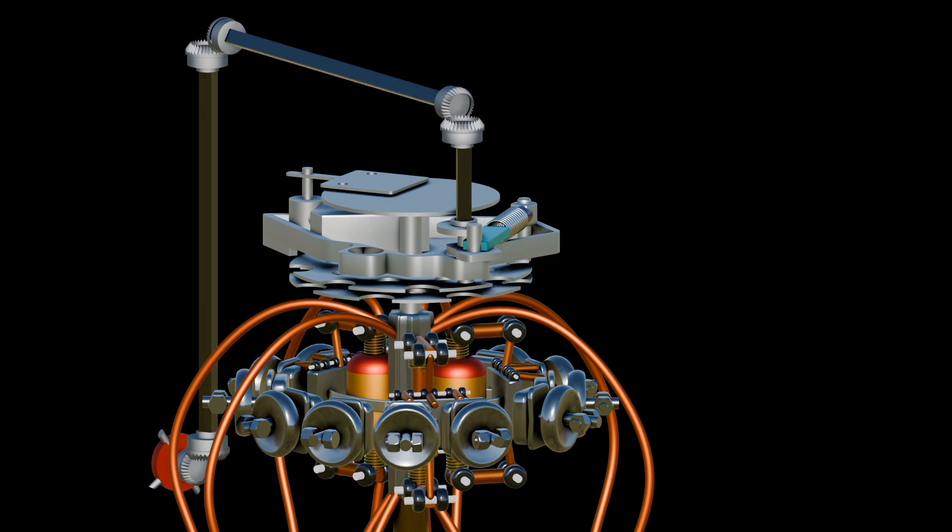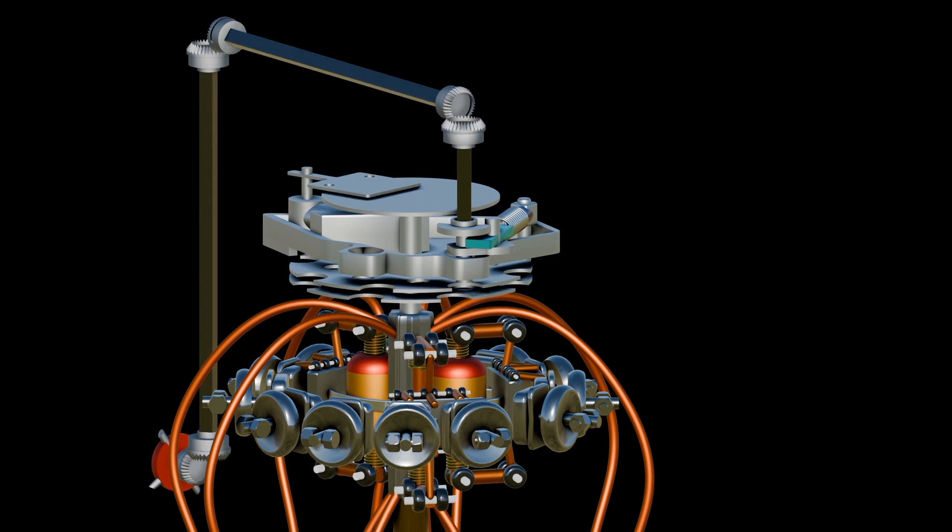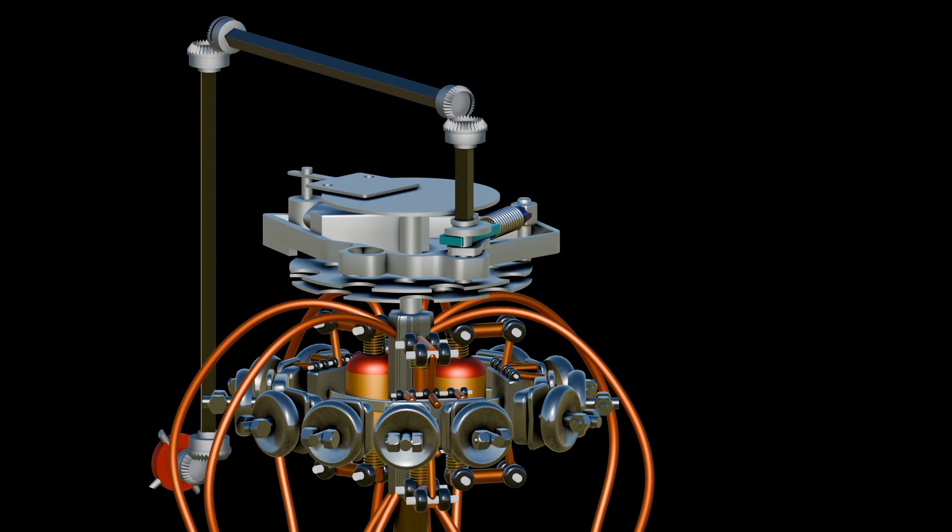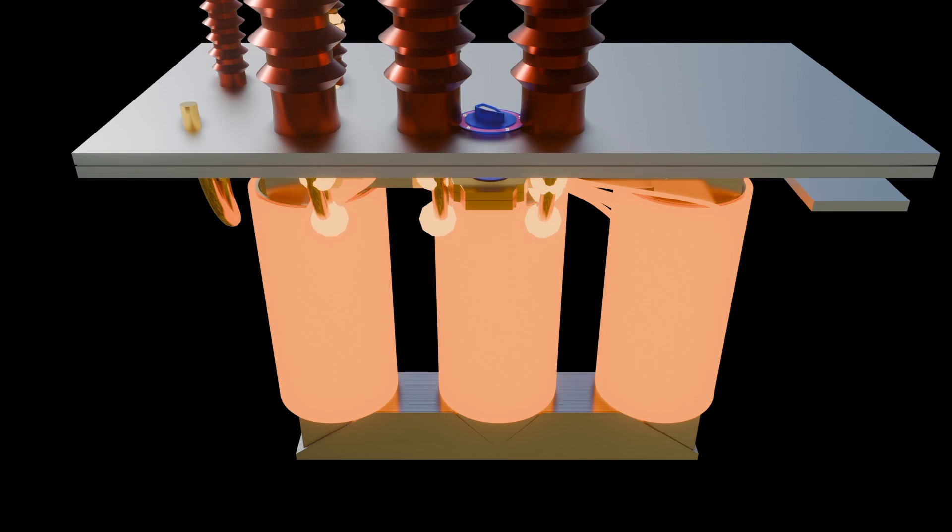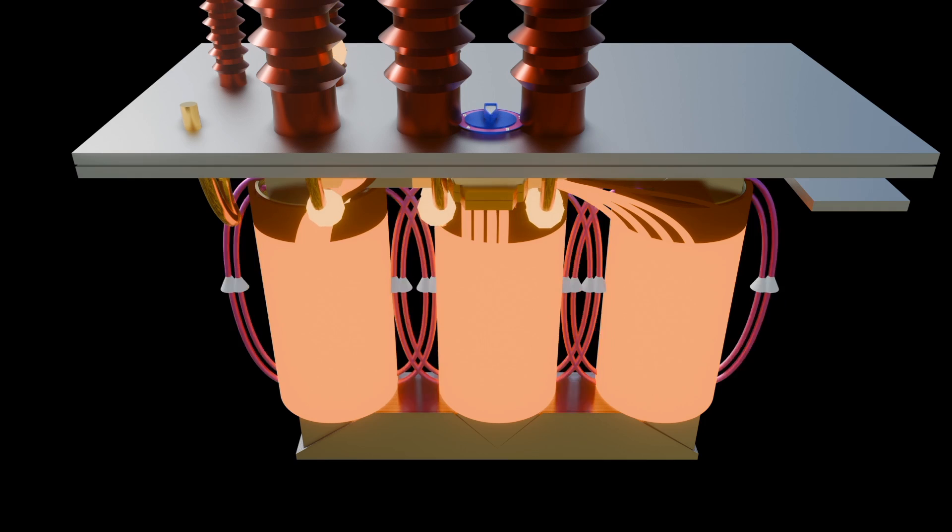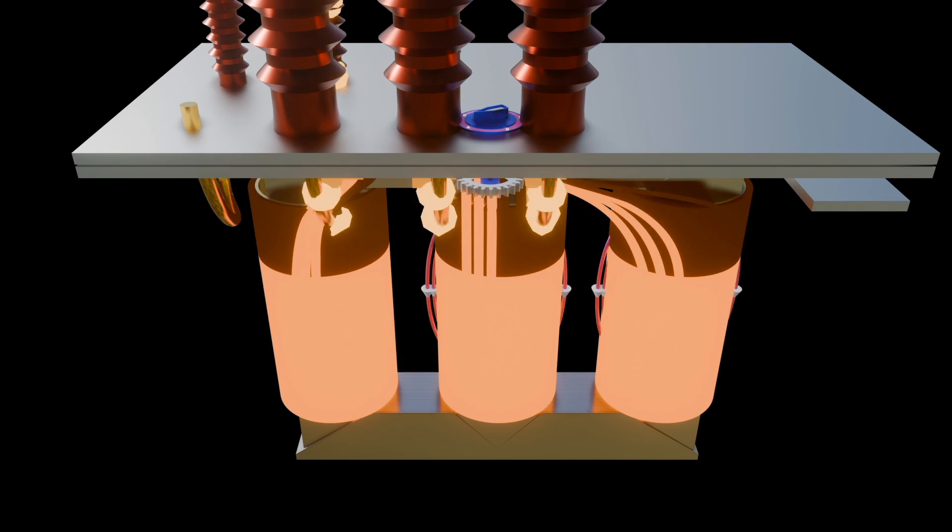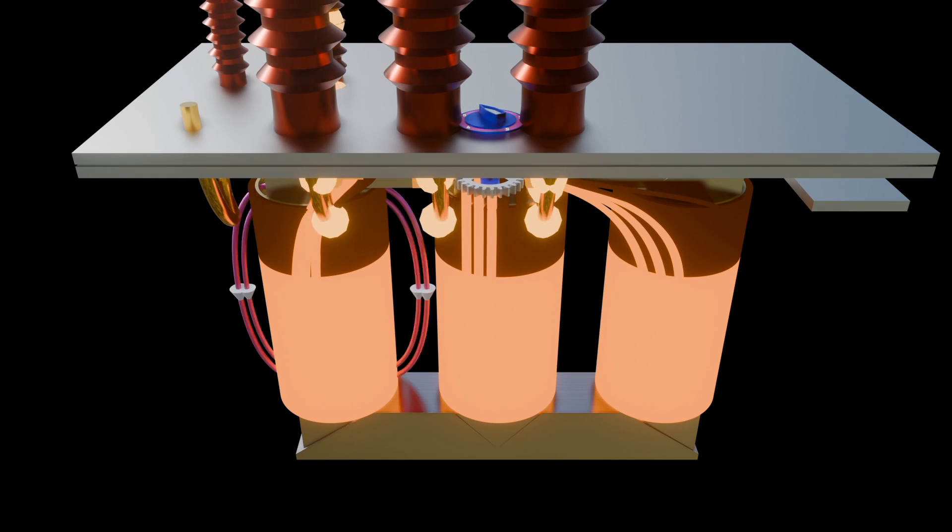Onload tap changer is a device used in transformers to regulate the voltage output by adjusting the transformer winding. It enables voltage adjustments while the transformer is energized or under load, without interrupting power transmission. An OLTC typically consists of several key components.